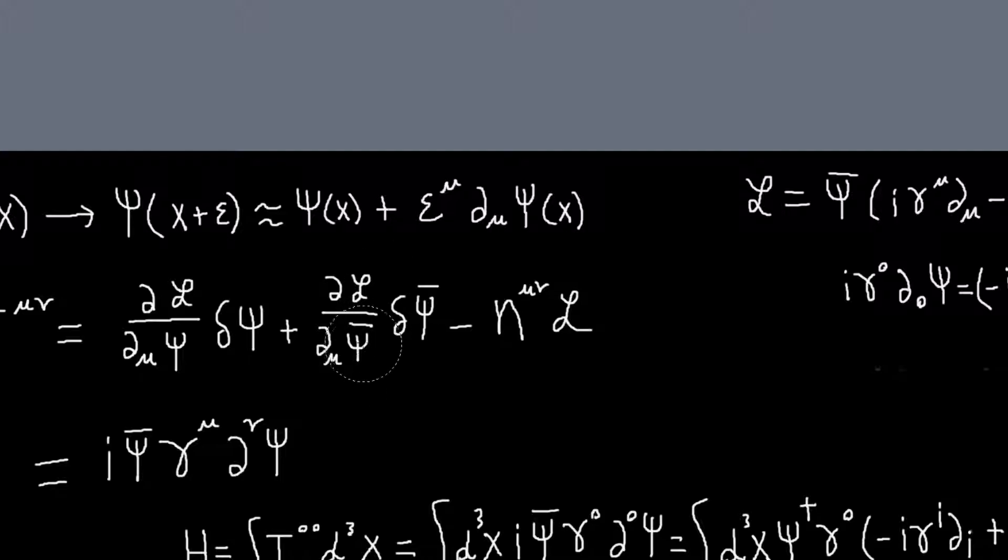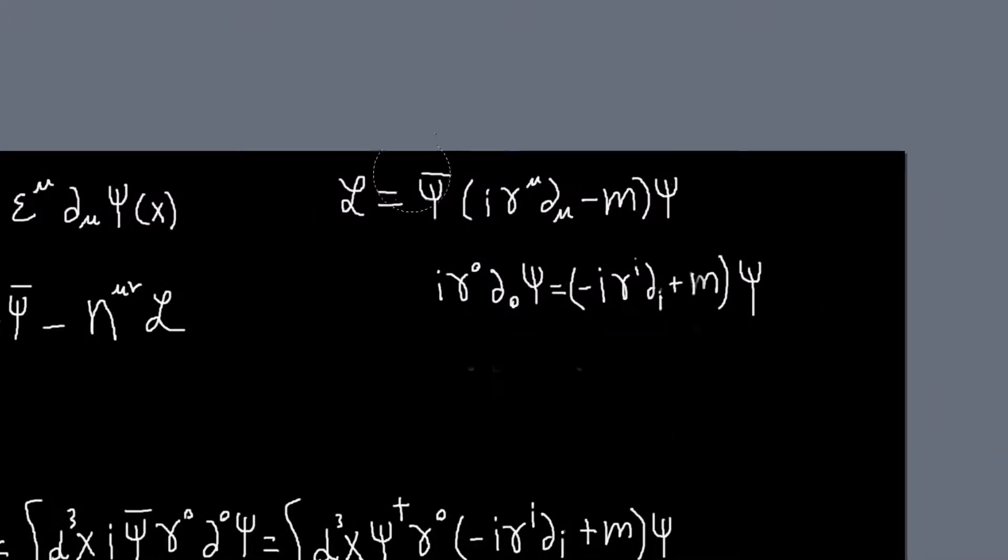There's no derivative with respect to ψ̄, so this goes away, so I just have this term which is easy to compute. And then because my Lagrangian involves, you know, it's basically ψ̄ multiplying the Dirac equation.